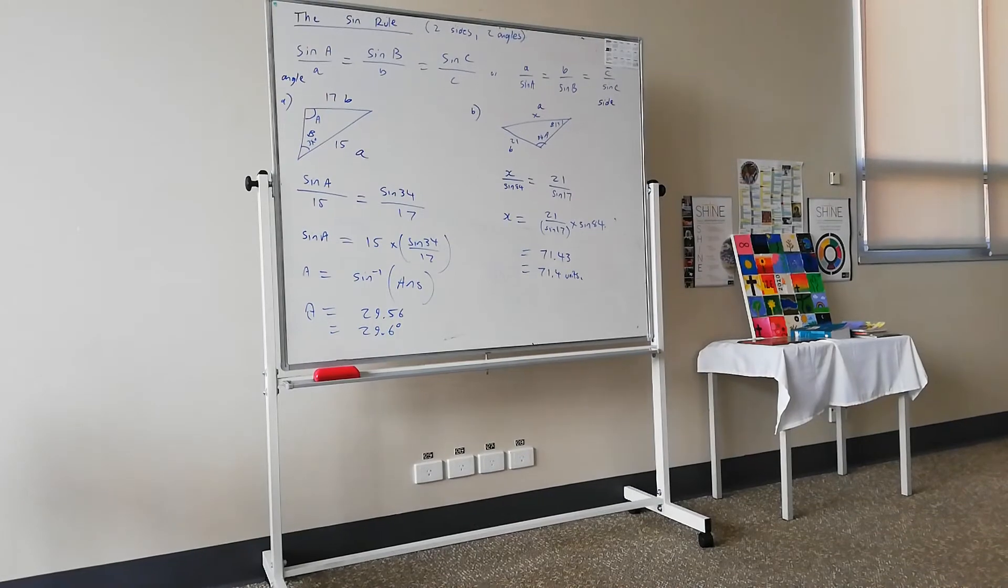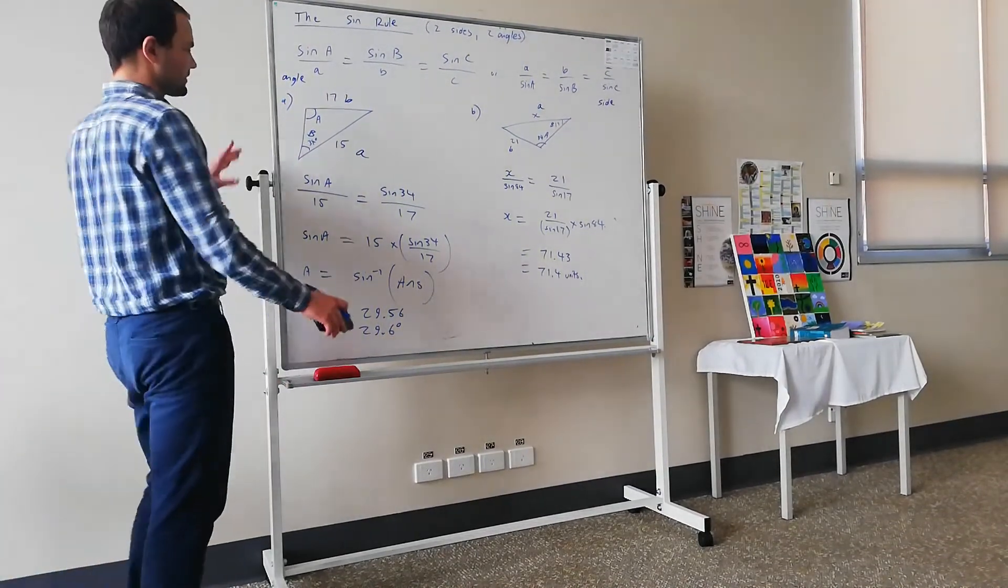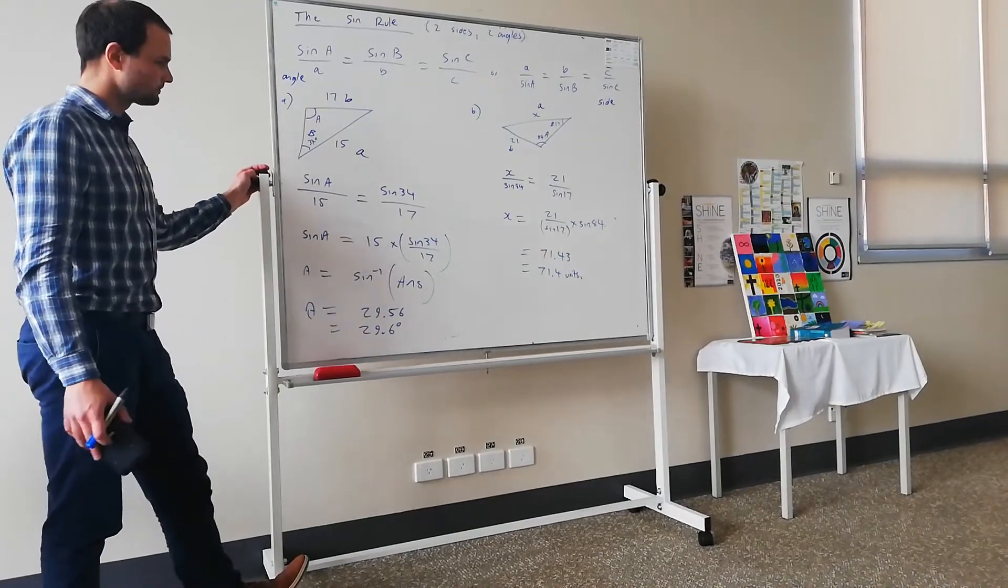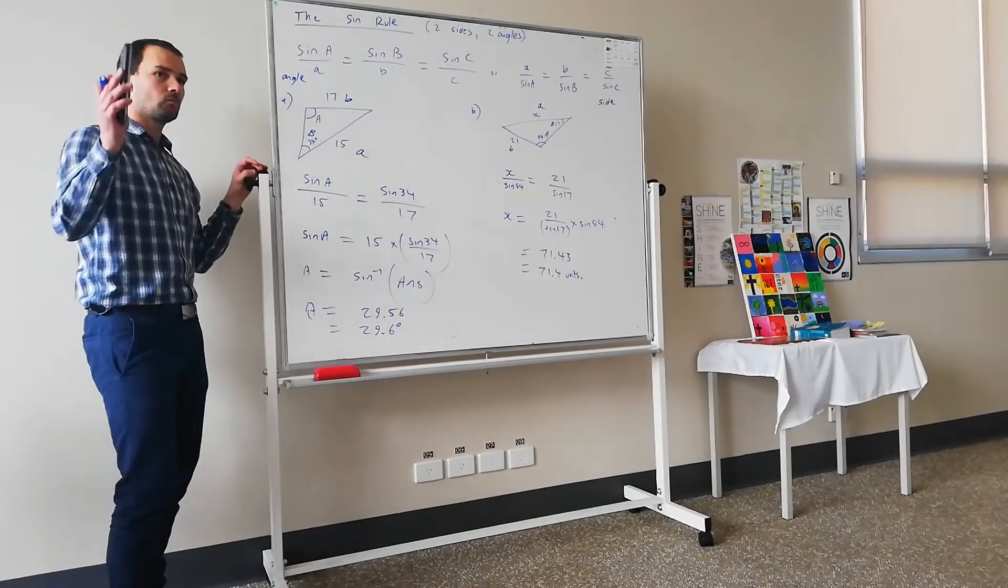So probably a little bit easier than the cosine rule. I reckon just stick with A and B, finding angle, finding the side. Any questions?